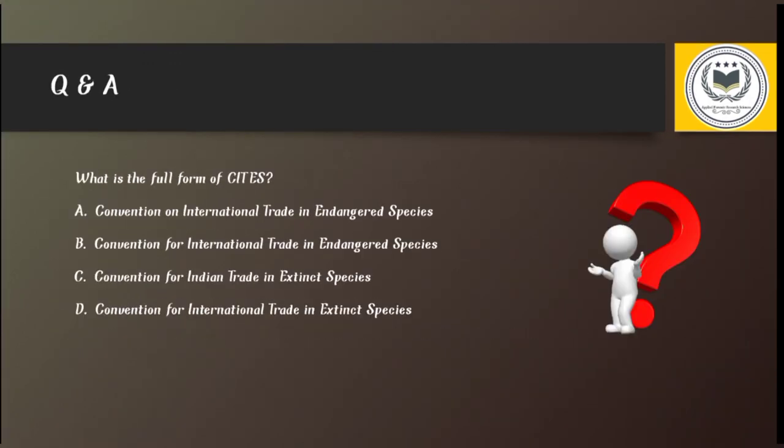Now we have reached the end of the video and it's MCQ time. The question is: what is the full form of CITES? Option A: Convention on International Trade in Endangered Species. Option B: Convention for International Trade in Endangered Species. Option C: Convention for Indian Trade in Extinct Species. Option D: Convention for International Trade in Extinct Species.